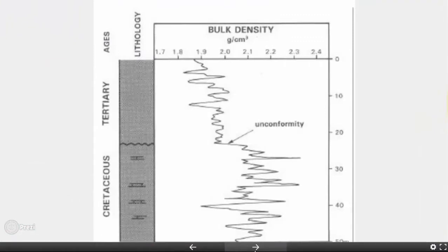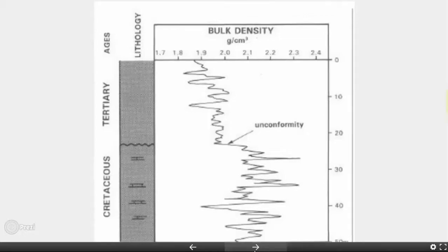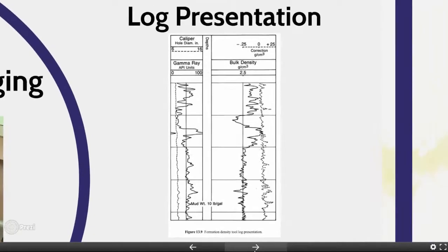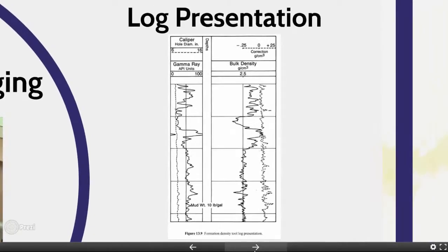If within a given shale interval there is a sudden change of density, the most likely explanation is that the formations above and below the change were deposited in completely different environments. This change is therefore an indication of a possible unconformity.